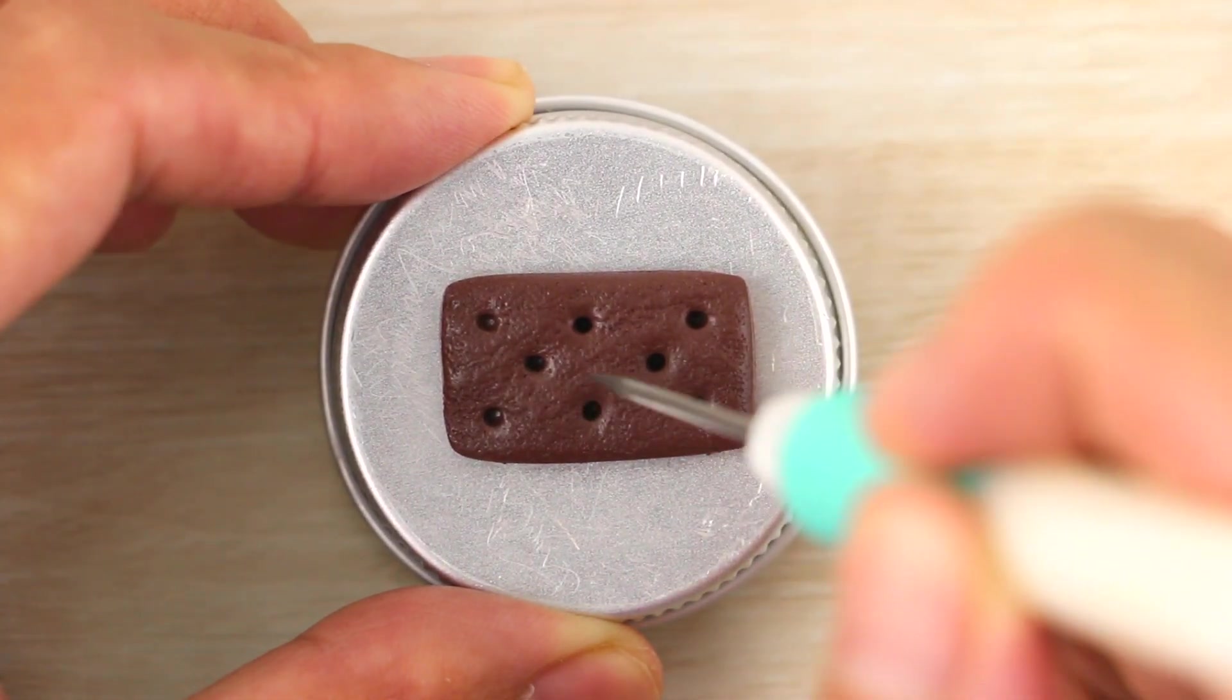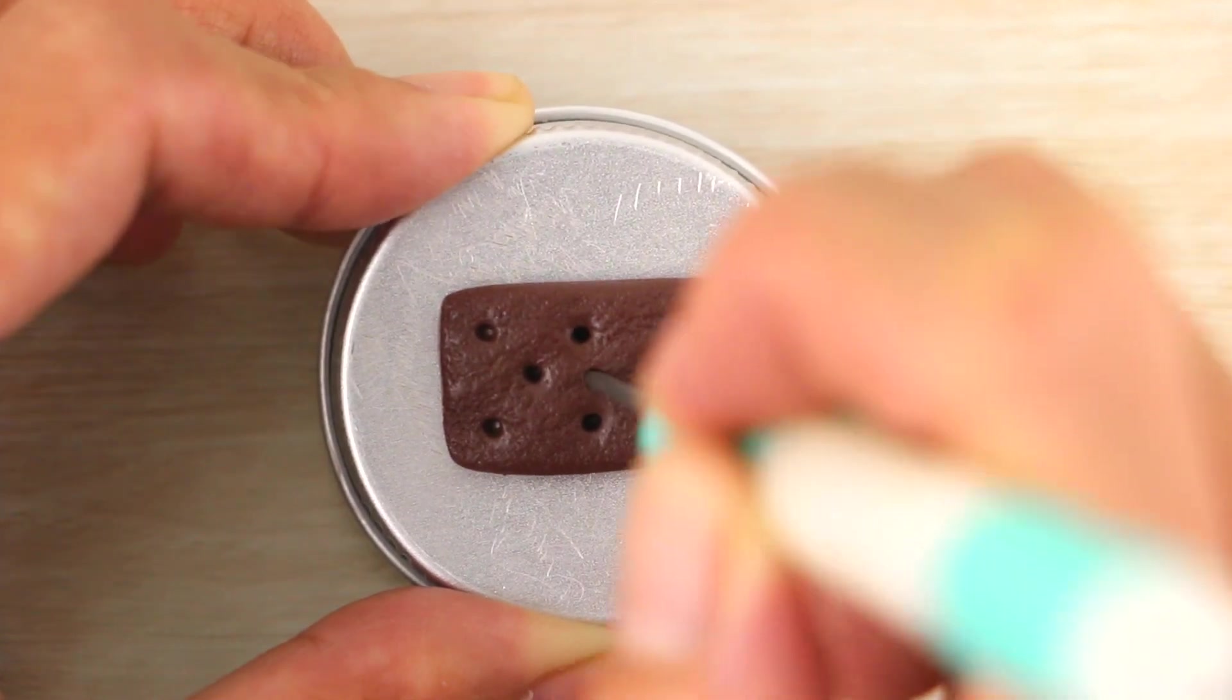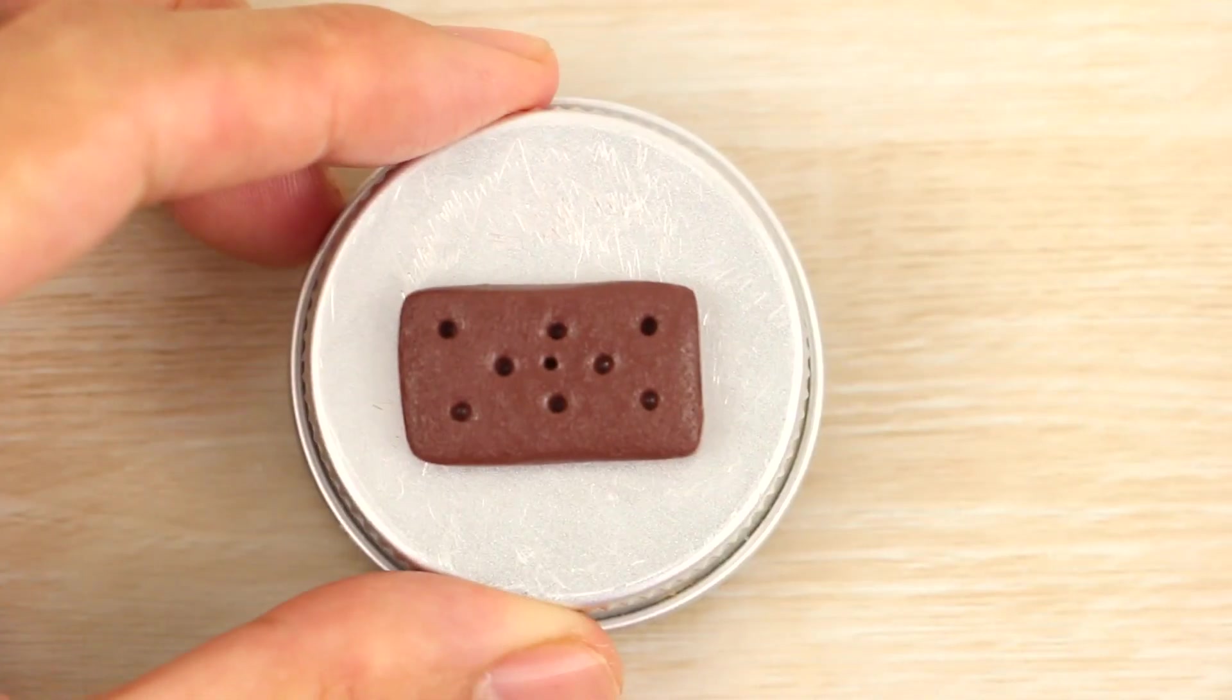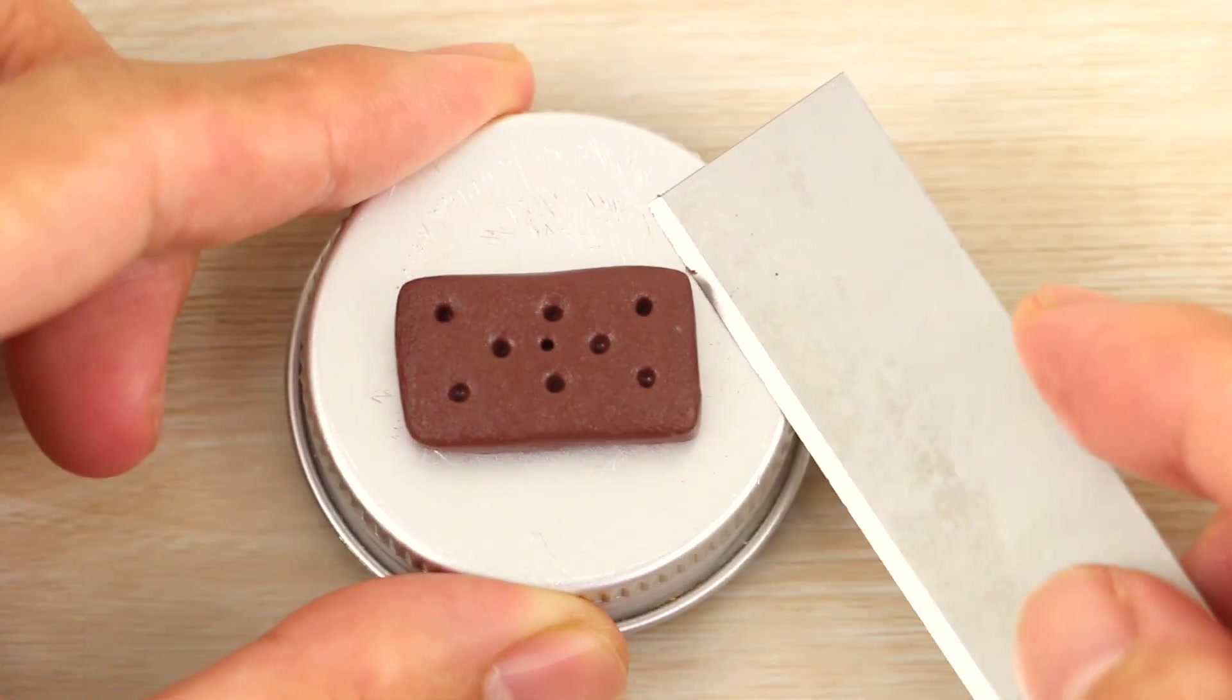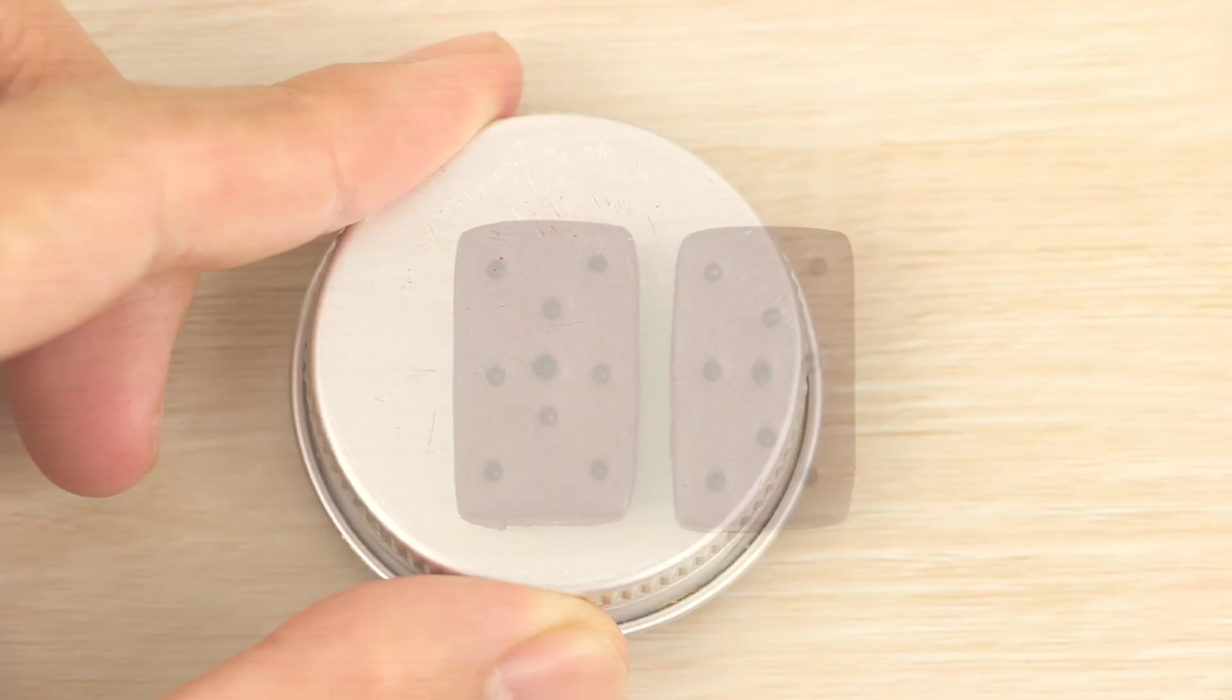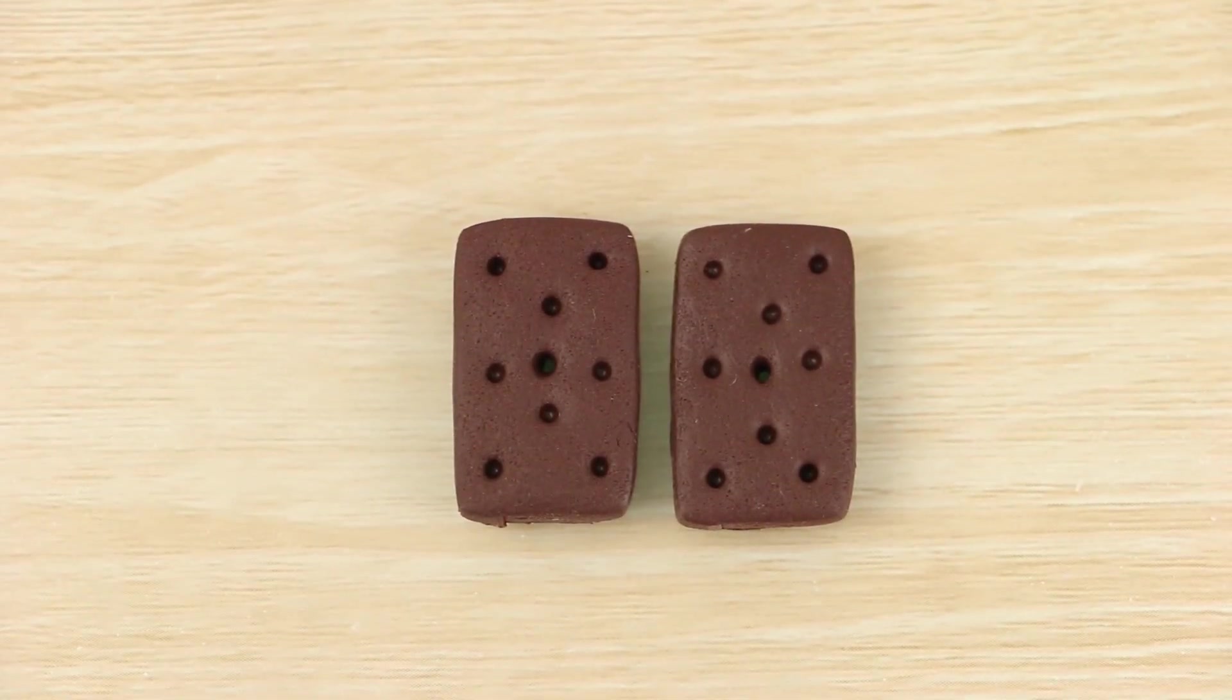And finally, I'm using my needle tool to poke a hole directly in the center of the rectangle, and this will be for the eye pin to go into later on. I'm then repeating everything on the second one, so that I have a matching pair. And then I'm going to bake them using my package's instructions, just so that they harden and it makes the charm a lot easier to assemble later on.